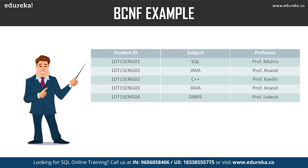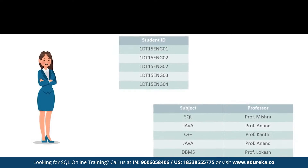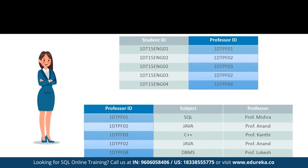To satisfy Boyce-Codd normal form, we divide the table into two parts. The first table holds student ID and a new column, professor ID. The second table has professor ID, professor, and subject columns. By introducing professor ID, we remove the non-prime attribute's functional dependency. Professor ID becomes the super key of the second table, and the remaining columns are functionally dependent on it. This satisfies Boyce-Codd normal form.